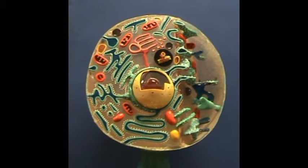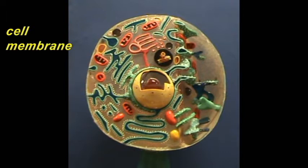The outer boundary of the cell is delimited by the cell membrane, and in this particular model, the cell membrane is actually represented as a distinct structure.